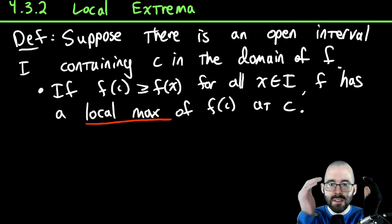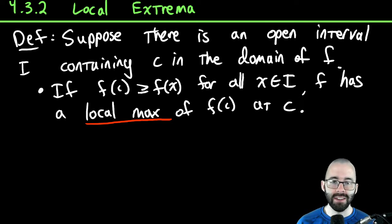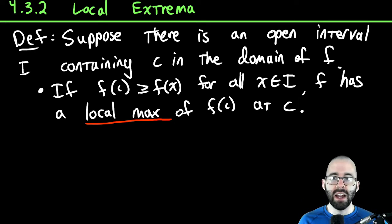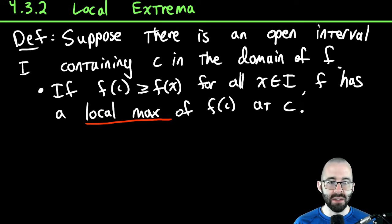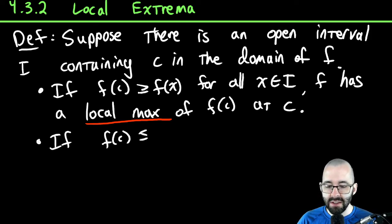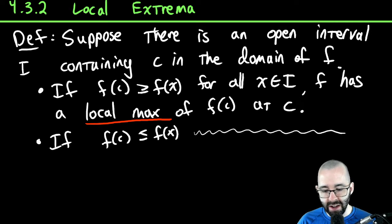A local maximum is just: can we zoom in on the function — can we zoom in to an open interval on that function — and have c be the location of the biggest value? And then we have very similar definitions for other things. If f(c) is smaller than every single other function value for all x in that interval, then f has a local minimum.